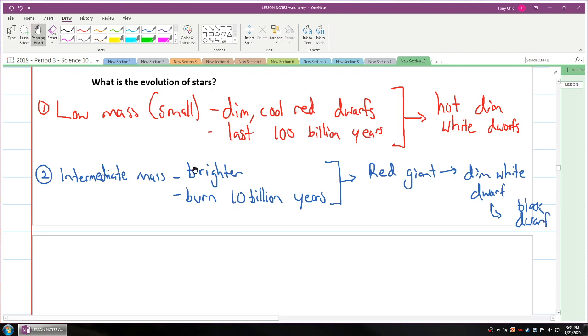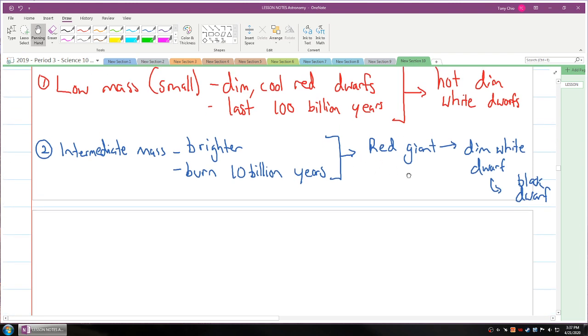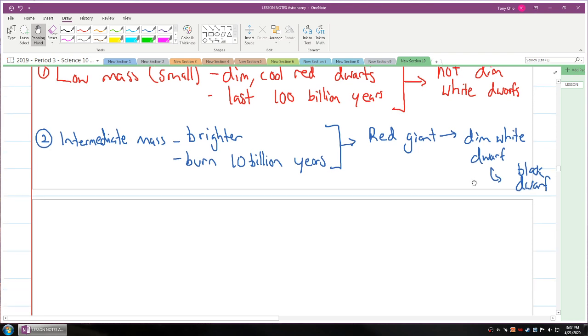This intermediate star, like our sun, is brighter. It burns for 10 billion years. It finally grows into a red giant when it's burnt away most of its hydrogen core. It will turn into a dim white dwarf, and then it turns into a black dwarf. These colors and sizes, we're going to talk more about when we get to a specific chart.